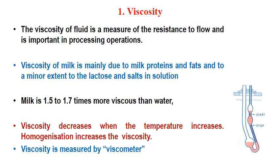The first property is viscosity. The viscosity of a fluid is a measure of the resistance to flow and is important in processing operations. Any liquid will face a resistance for flowing — that is called viscosity. Viscosity of milk is mainly due to milk proteins and fats, and to a minor extent due to lactose and salts in solution form. Milk is 1.5 to 1.7 times more viscous than water.